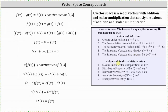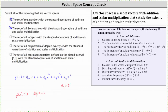Moving to the axioms of scalar multiplication: any scalar a times a continuous function over [1, 3] results in another continuous function over [1, 3] — we have closure under scalar multiplication. The distributive properties hold: c times the sum of f(x) and g(x) equals c·f(x) plus c·g(x), and the quantity c plus d times f(x) equals c·f(x) plus d·f(x). The associative property of multiplication is also true, and we have the multiplicative identity where one times f(x) equals f(x). All axioms are satisfied, so the set of all continuous functions defined over the closed interval from one to three forms a vector space.